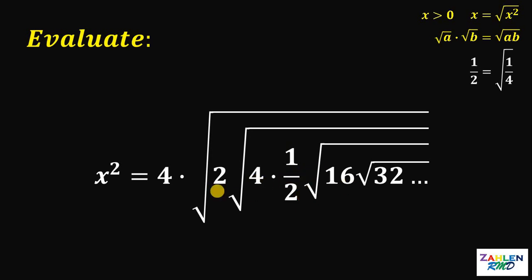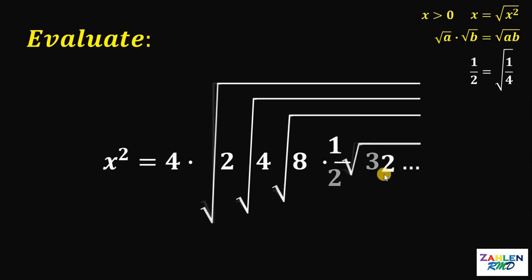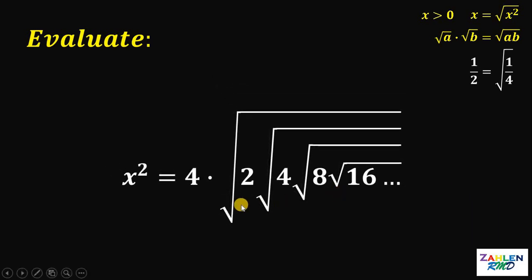Again, we do the same thing — one-half is equivalent to square root of one-fourth. We multiply one-fourth into 16, giving us 8 times one-half, then 16 times one-half, and we continue doing the same thing until we reach the end. This gives us x squared equals 4 times square root of 2 times square root of 4 times square root of 4 times square root of 8 times square root of 16, and so on and so forth.